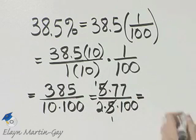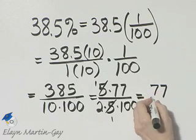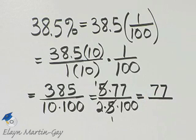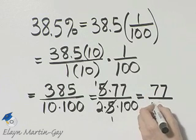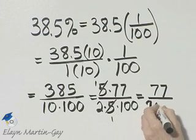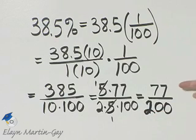So in the numerator, 1 times 77, which is 77. In the denominator, 2 times 100, which is 200. So what is my ending result? 77 over 200, and that is the fraction equivalent of this percent.